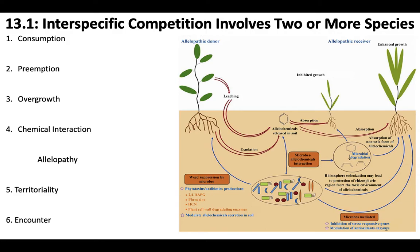You can also have chemical interactions, where chemical growth inhibitors or toxins are released by an individual to inhibit or kill other species. One special type of chemical interaction is allelopathy, which specifically refers to plants: chemicals produced by some plants inhibit germination and establishment of other species.